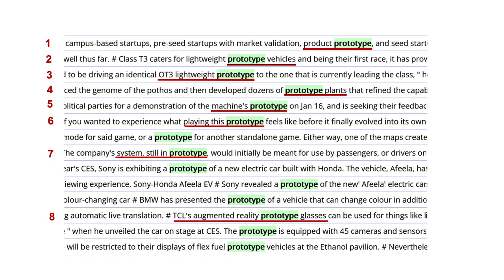Let's take a closer look at these to see what more they tell us about the word prototype. In line one, we see a product prototype, so prototype can be modified in some way. In line two, we have lightweight prototype vehicles, so a prototype is not always a robot, and it can be used to modify the vehicles. In line three, again it is used to refer to the lightweight vehicles, but prototype alone refers to them, and we understand from the context what the prototype is.